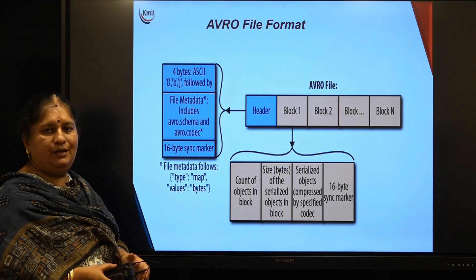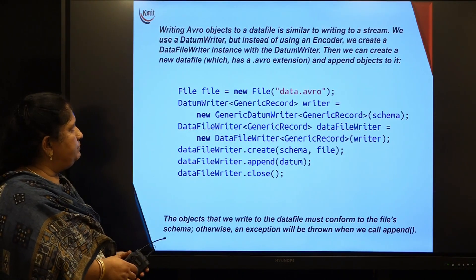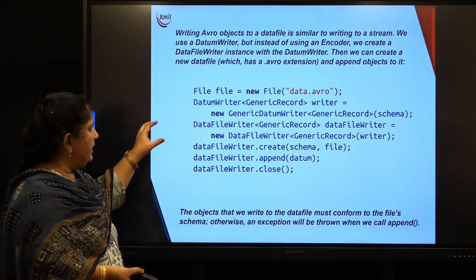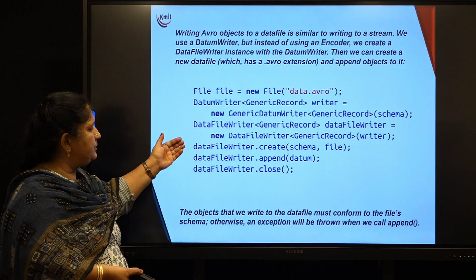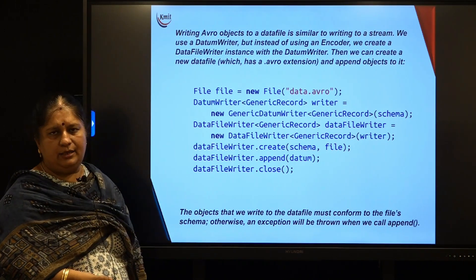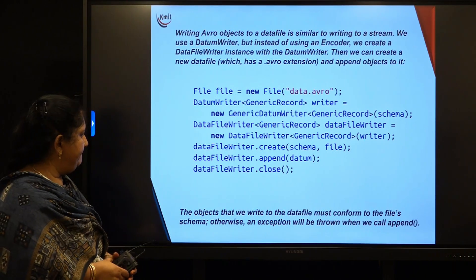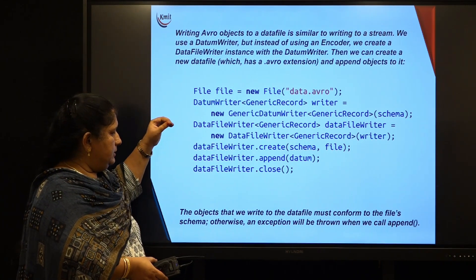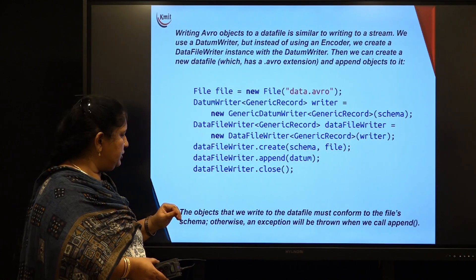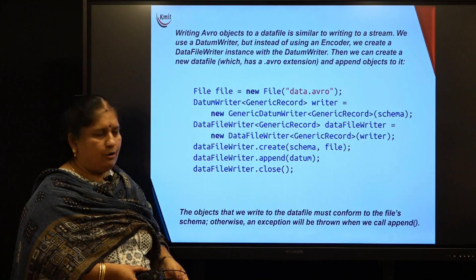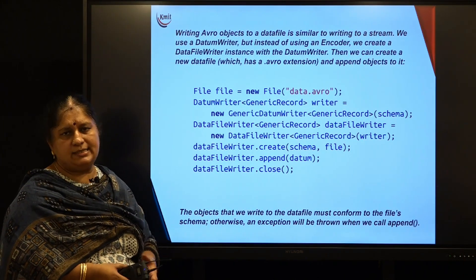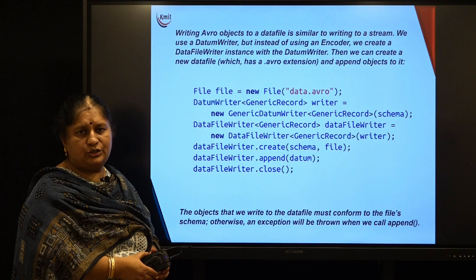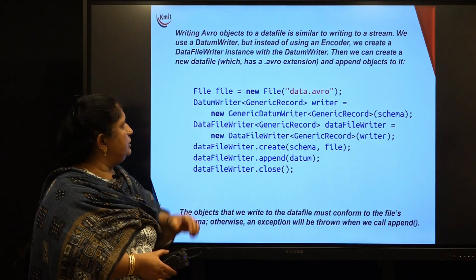This is how an Avro file will be maintained. Each individual data block contains the count of how many objects are there, the size of the serialized objects in bytes, the serialized objects themselves, and a block-ending sync marker. This sync marker is for the entire set of files, and a 16-byte sync marker is specified at the end of every block. Writing Avro objects into a data file is similar to writing a data stream into a file using Java concepts. The schema of the object must match the data we are trying to write — if they do not match, you will get an exception when appending. All Avro objects are stored in a file with extension dot Avro.